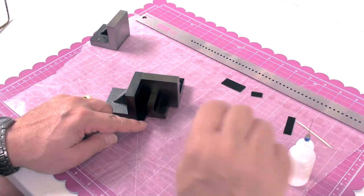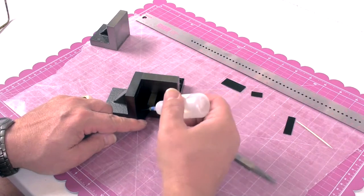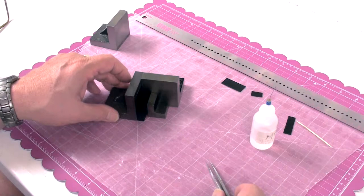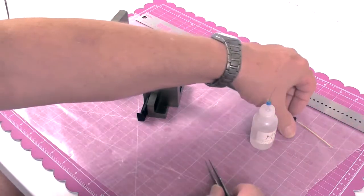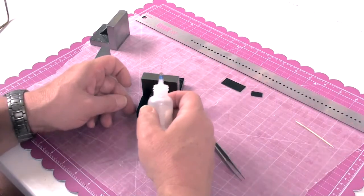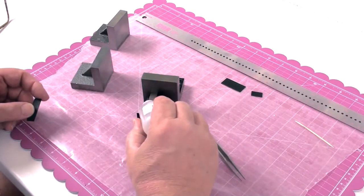Why I like MEK for this sort of thing is that it sets up very quickly. Wicks in, sets up quickly. It isn't necessarily as strong as the Fowler Expert because it doesn't provide a fillet or a filling in between the two sides.